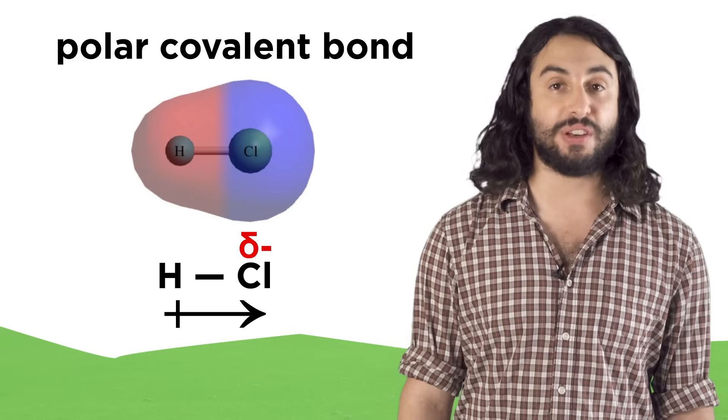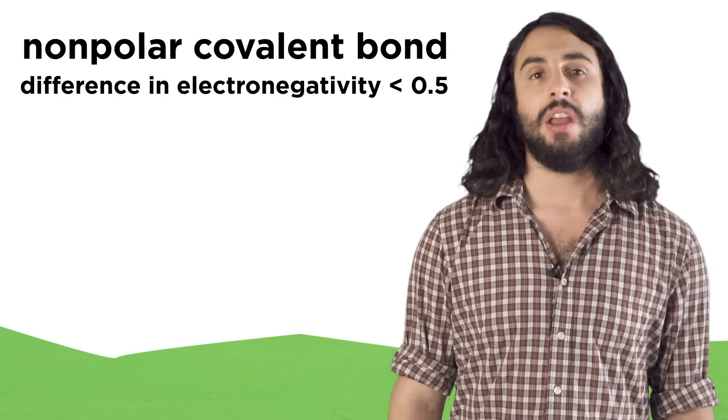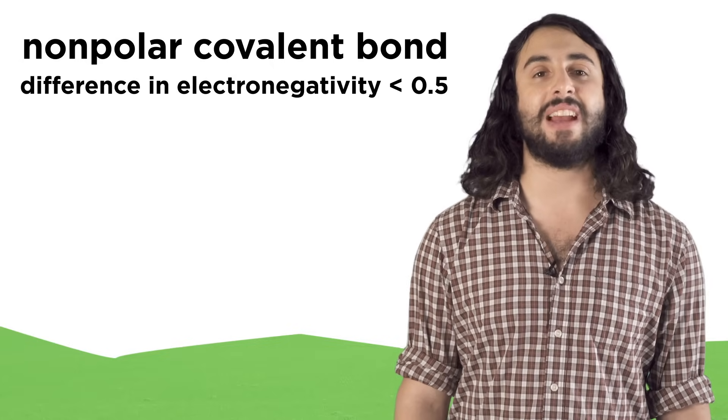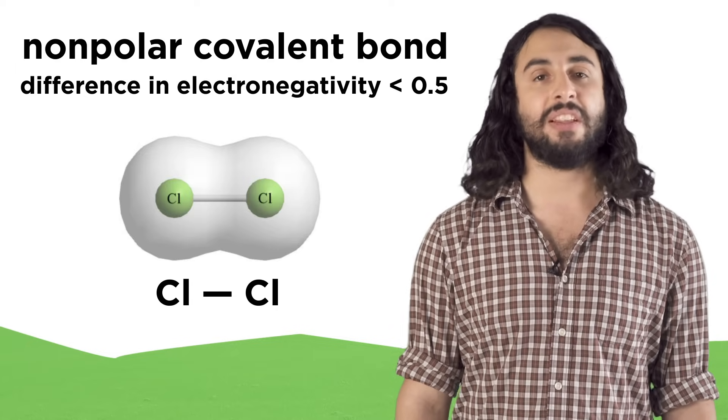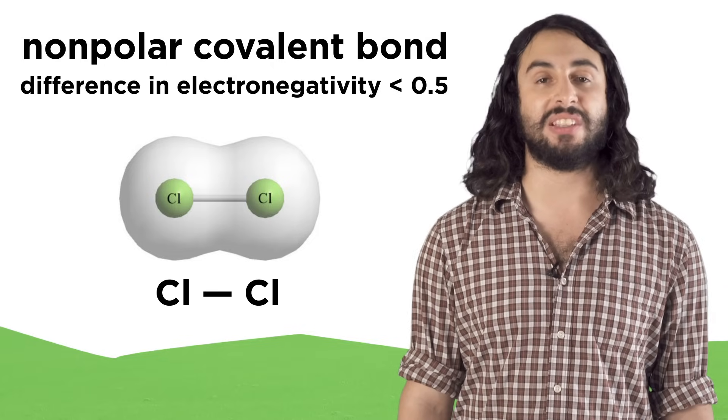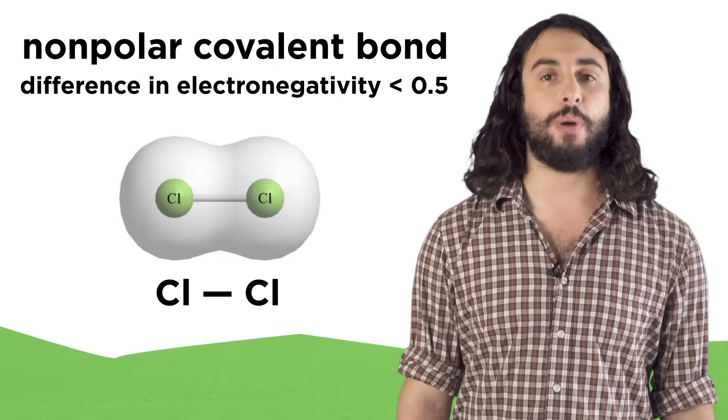If the electronegativity difference is less than 0.5, the covalent bond is said to be nonpolar. In a nonpolar covalent bond, the electrons are shared more or less evenly, or in the case of two atoms of the same element, precisely evenly. The atoms will have no partial charges at all.